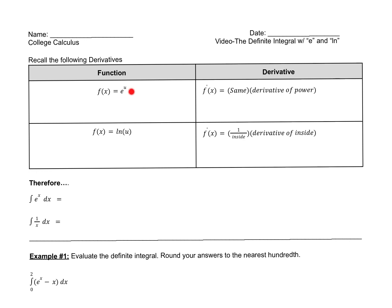Remember the function e to the u? The derivative f prime was the same times the derivative of the power. So if I had y equals e to the x and I wanted dy/dx, it would be e to the x times the derivative of the power. We know the derivative of x is just 1, so the derivative is just e to the x. The original e to the x gives us a derivative of e to the x.